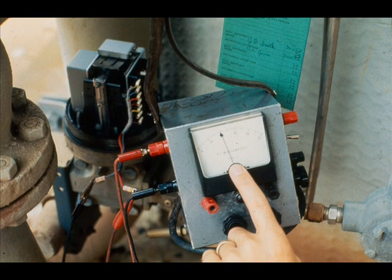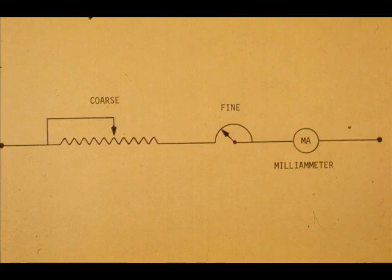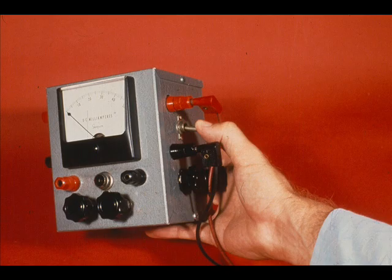The milliamp meter is in the circuit when using the variable load feature. The variable load is a coarse and fine resistor in series and can be used where applicable. Be sure to turn off the power switch when finished with the test set. This will preserve the battery.